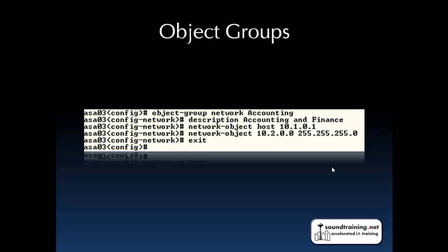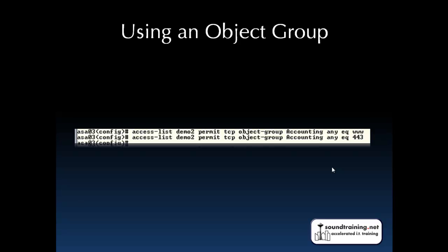Here's an example of how we might use object groups. We create an object group called 'accounting' and make it a network object group, focusing on IP addresses. We add a description to document it — always document so you can see what you were thinking later. Then we specify the individual objects: the first is an individual host at 10.1.0.1, the next is a subnet at 10.2.0.0 with a 24-bit mask. Then we use it in an ACL, replacing the source IP address with 'object-group accounting,' which applies it to that host and subnet.